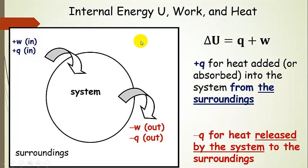Same thing goes for heat. If we put heat into the system — if the system absorbs heat — then Q is positive, and it's absorbing that heat from the surroundings. If the system releases heat, so heat comes out, then that is negative Q — heat released by the system to the surroundings.